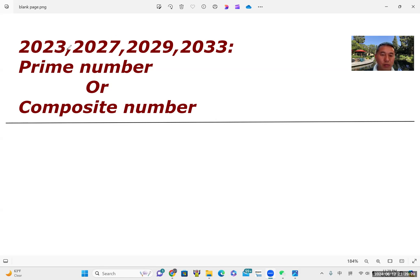For example, 2023, 2027, 2029, 2033. As you know, this year is 2024. So last year is 2023. The coming year, like this. Yeah, I choose someone not very easy to find its prime or composite. Anyway, I hope this is an interesting topic.